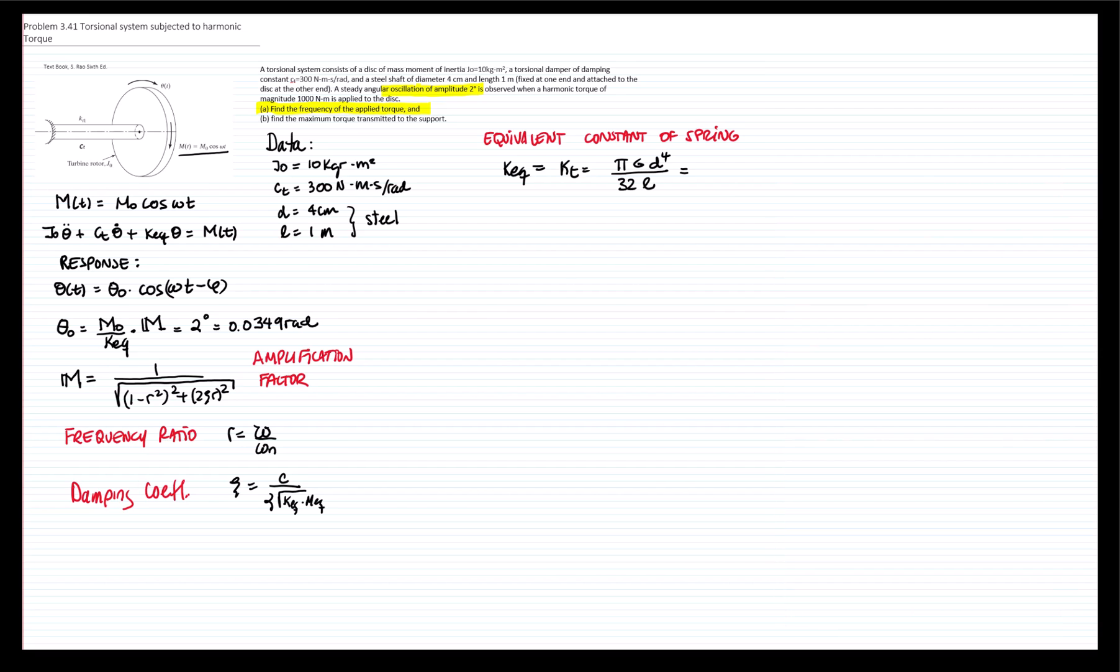We know that for steel, the value for the shear modulus is 79.3 gigapascals. So if we put all the numbers here, we have the diameter divided by 32 and the length is 1 meter. We get that the equivalent constant for that shaft takes this value.